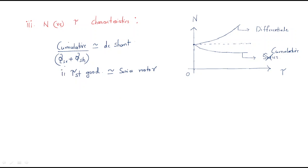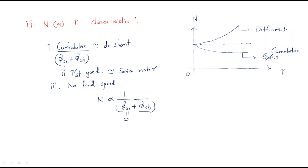Another advantage is that we can maintain the no-load speed. At no-load condition, flux depends on both shunt and series fields. At no-load, the series flux is zero but we have shunt flux, and due to the shunt flux we can control the speed. So the no-load speed is limited and in our control — it is not infinite. That is why these motors are very suitable and useful.